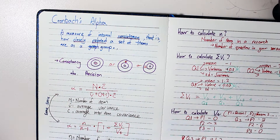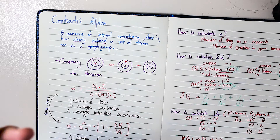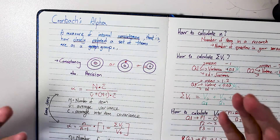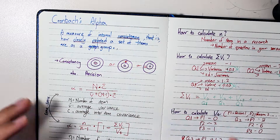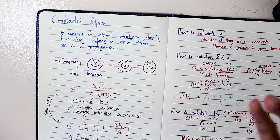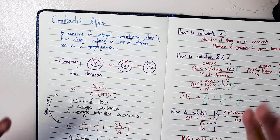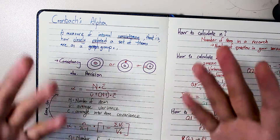Good afternoon everyone. Today we are going to talk about Cronbach's Alpha, which is actually a mathematical equation for calculating internal consistency among an experiment. The formal definition: Cronbach's Alpha is a measure of internal consistency — that is, how closely related a set of items are as a group.